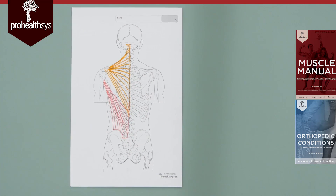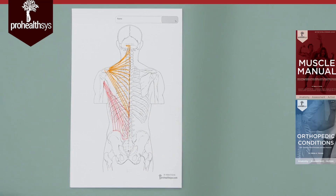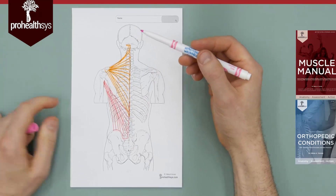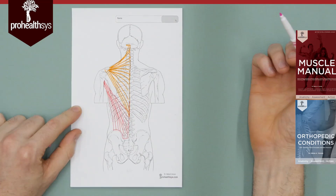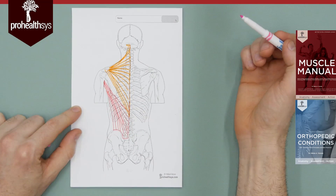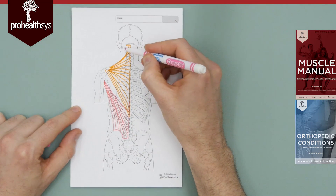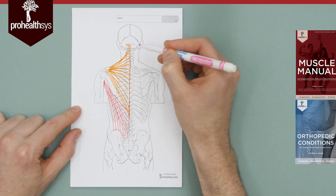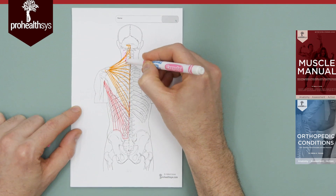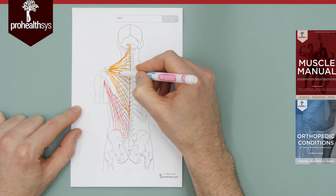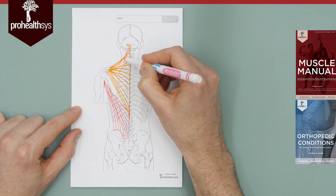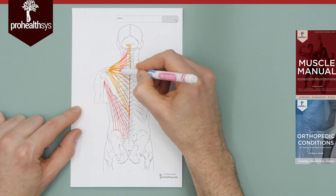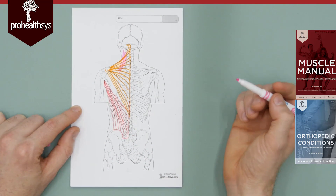Let's move on. Keeping things in order, let's go ahead and do levator scapulae. Where does it originate? Transverse processes of C1, C2, and C3 — it kind of spirals around and down. Where does it insert? The superior medial border of the scapula, running up like that.